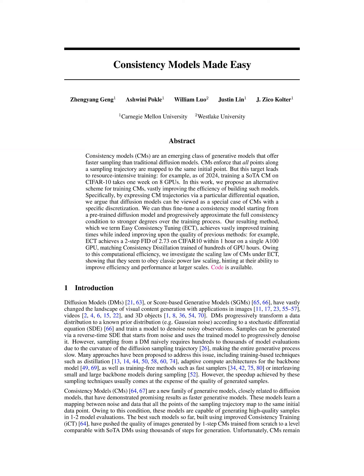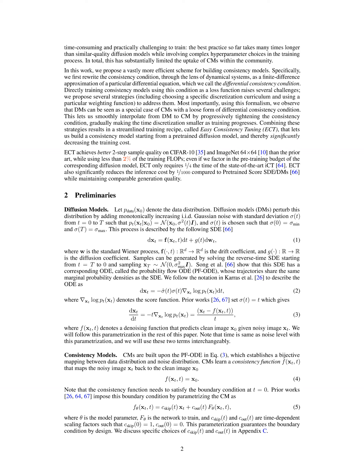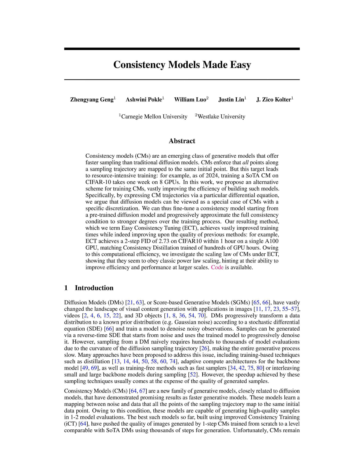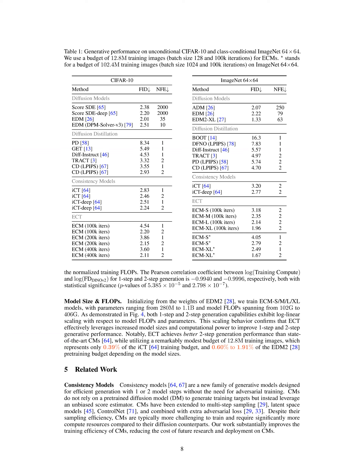The theoretical and practical benefits of using Easy Consistency Tuning, ECT, compared to existing methods like diffusion distillation and improved consistency training, ICT, are significant. The key advantage of ECT is its efficiency in training consistency models by starting from a pre-trained diffusion model, thereby reducing the training cost substantially. ECT allows for a smooth transition from diffusion models to CMs by gradually tightening the consistency condition during training, leading to high-quality sample generation in just one or two model steps. This streamlined training approach results in better two-step sample quality on datasets like CIFAR-10 and ImageNet-64x64 compared to ICT, while using significantly fewer training flops.